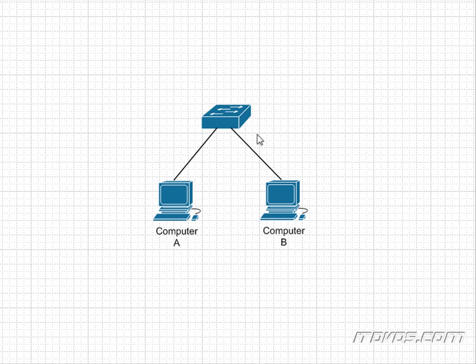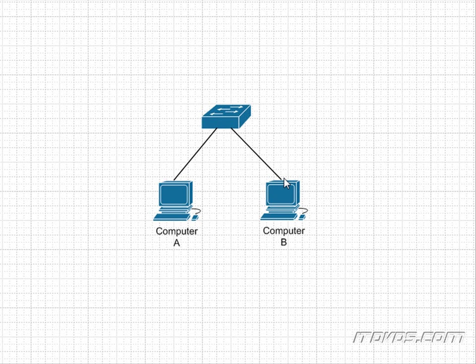Now let's replace that hub with a switch. How many collision domains do we have? We have two — this is one collision domain and this is another collision domain — because they're plugged into different ports on the switch, and each port on the switch is a new collision domain. So computer A could transmit at the same time as computer B and we wouldn't have any collisions.